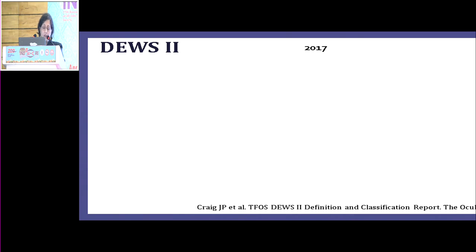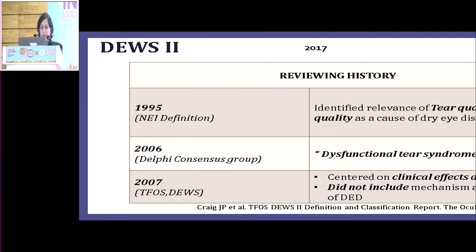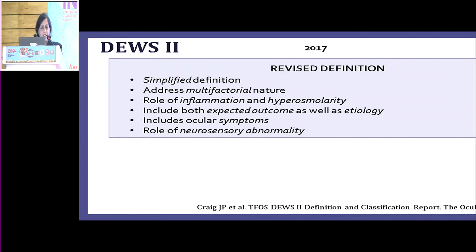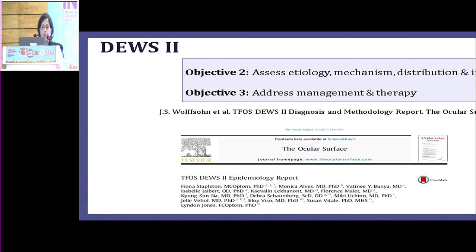With DEWS II, published 10 years after the 2007 report, the objective was to create an evidence-based definition and contemporary classification. The central concept is loss of homeostasis of the tear film. Previous definitions came in 1995, then the 2006 Delphi consensus, then 2007. The 2017 DEWS II definition is simplified, addresses the multifactorial nature, and has ingrained the role of inflammation and hyperosmolarity. It also includes expected outcomes, etiology, symptoms, and the role of neurosensory abnormality as seen in masquerade syndromes.